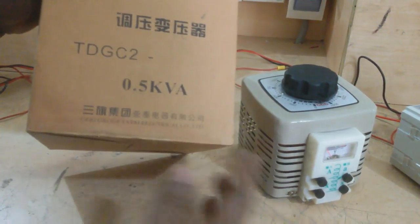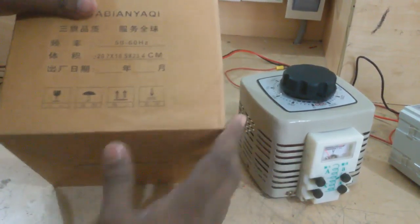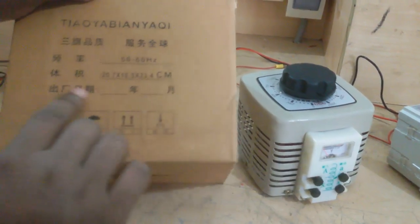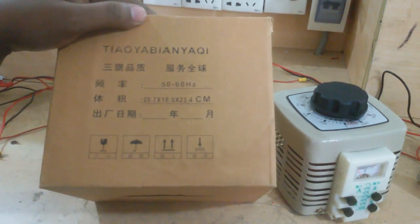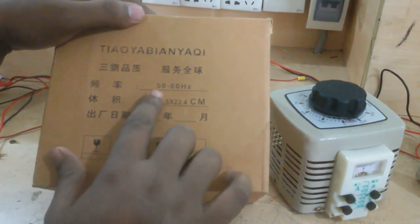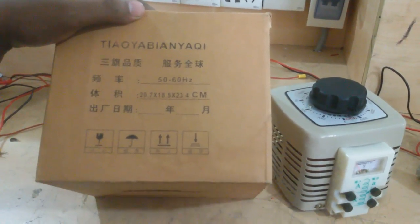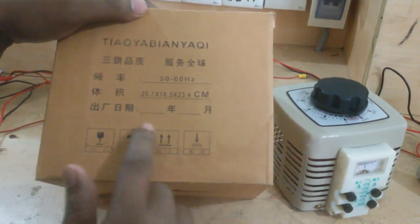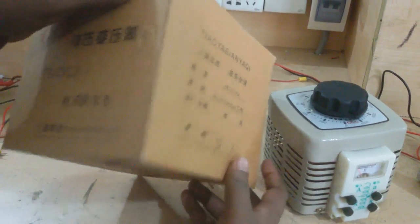It also depends on this regulator efficiency. And here is given some data. This is 50 to 60 hertz frequency, and this is the size of this voltage variant.